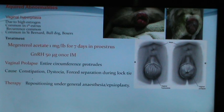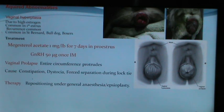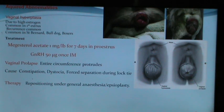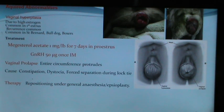One must distinguish between vaginal prolapse and vaginal hyperplasia. In vaginal prolapse, the entire circumference of the vagina protrudes out. Causes of vaginal prolapse include constipation, dystocia, and forced separation during the copulatory tie. Therapy includes repositioning under general anesthesia and episioplasty.